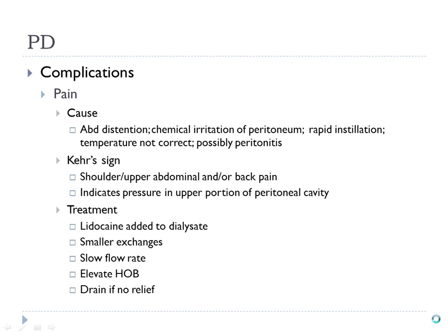After a C-section, you can have lots of retained air in your abdominal cavity. To help prevent pain during PD, you can put lidocaine in the dialysate to numb the peritoneal cavity. Also use smaller exchanges or deliver the dialysate a little bit more slowly.